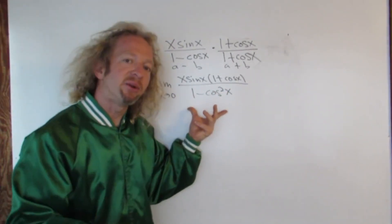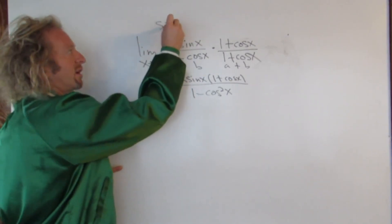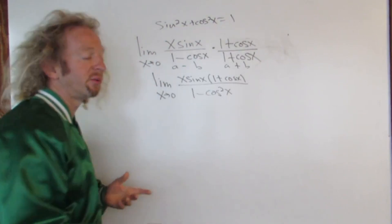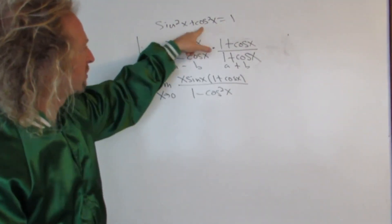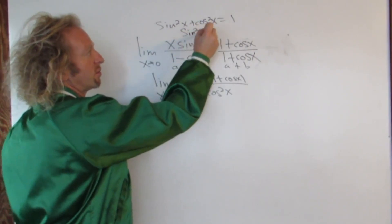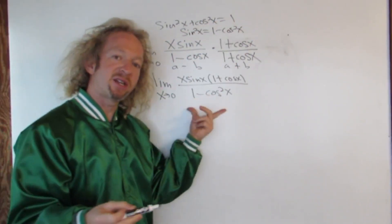Now you can use an identity. Because if you have sine squared plus cosine squared, that's equal to 1. So if you subtract the cosine squared, you would get sine squared equals 1 minus cosine squared.